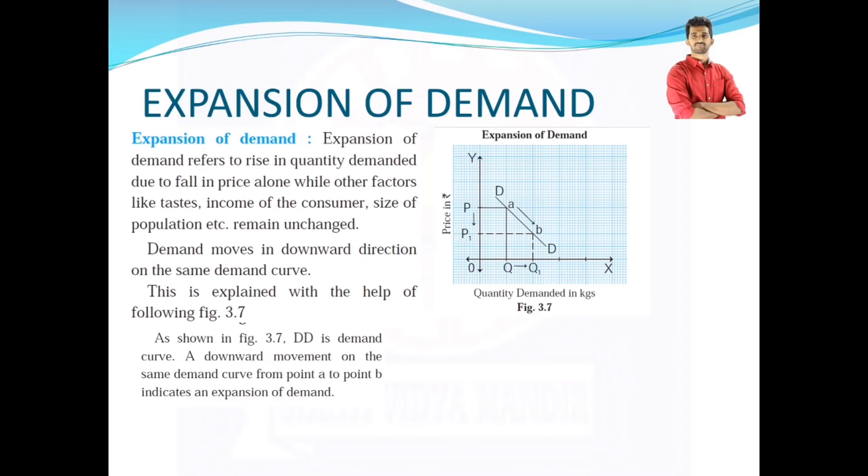Demand moves in downward direction on the same demand curve. In figure 3.7 in your new textbook, x-axis denotes quantity demanded in kgs whereas y-axis denotes price in rupees. You can see as the price falls, the quantity demanded increases. This has been explained in the law of demand where we saw the natural human tendency that whenever the price falls for a commodity, people tend to buy more of that particular commodity.